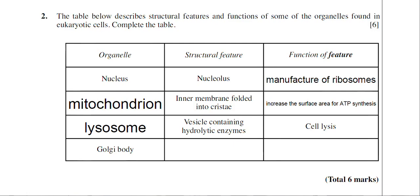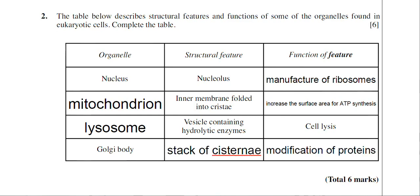Lastly, we're given the organelle: the Golgi body. The structural feature of the Golgi is very characteristic — it contains a stack of flattened sacs called cisternae, which stack on top of each other, a very characteristic image under the electron microscope. The function of these cisternae: they can modify proteins — for example, sugar residues can be attached to the protein — and then the protein can be packaged into a vesicle and transported out of the cell. So the structural feature is a stack of cisternae, and the function is modification of proteins. That completes question two.